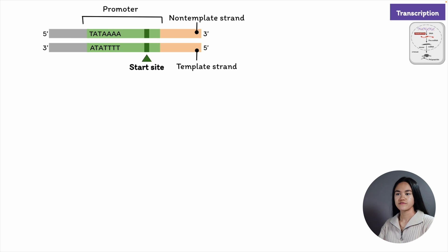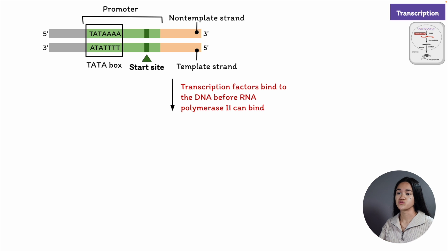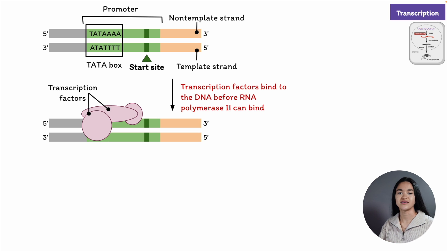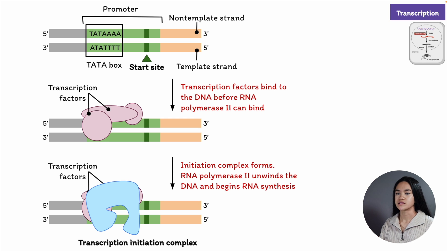A transcription factor binds to a short segment composed primarily of T and A nucleotides known as the TATA box. The TATA box is an important component of many promoters, located about 25 nucleotides upstream from the transcription start point. Once bound to the TATA box, other factors assemble along with the RNA polymerase to form the transcription initiation complex. Once the RNA polymerase has been positioned correctly, the DNA double helix unwinds and the polymerase must be released from the transcription factors before RNA synthesis can begin.